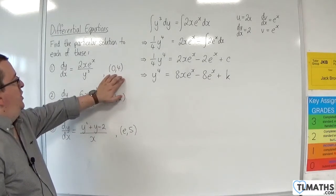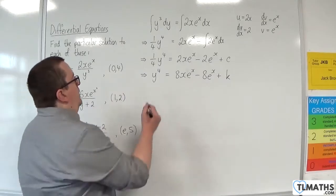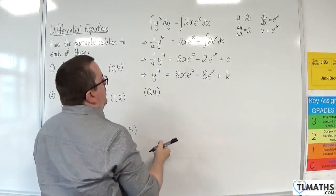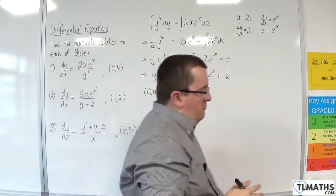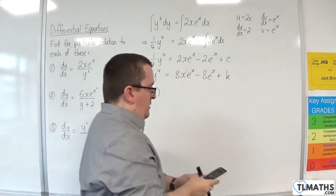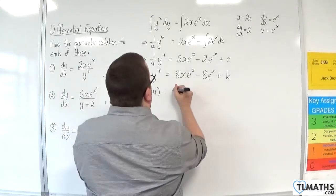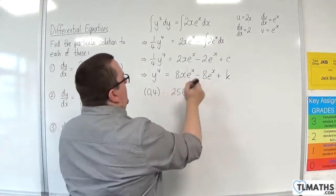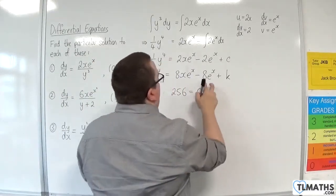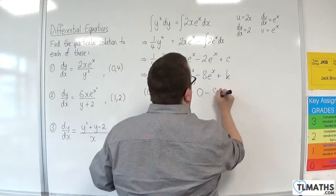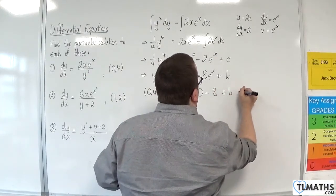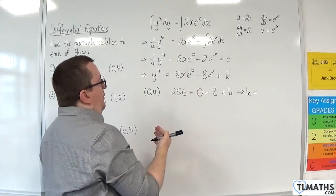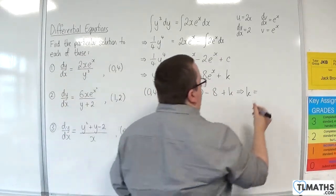Now, I need to substitute in (0, 4). So 4 to the power of 4 — that's 256. Substituting in x=0, we're going to get 0 there, take away 8 lots of e to the 0, so just take away 8, plus k. So adding 8 to both sides, we're going to get k = 264.